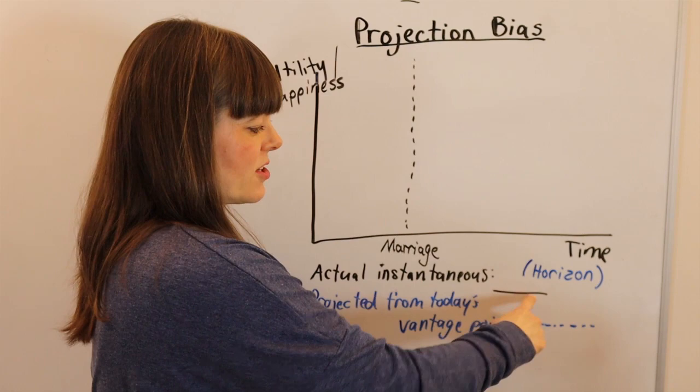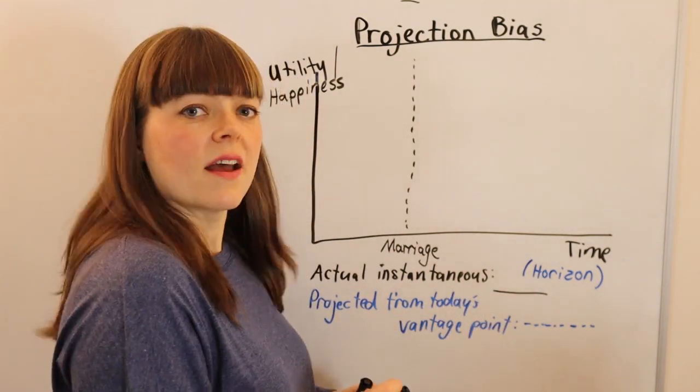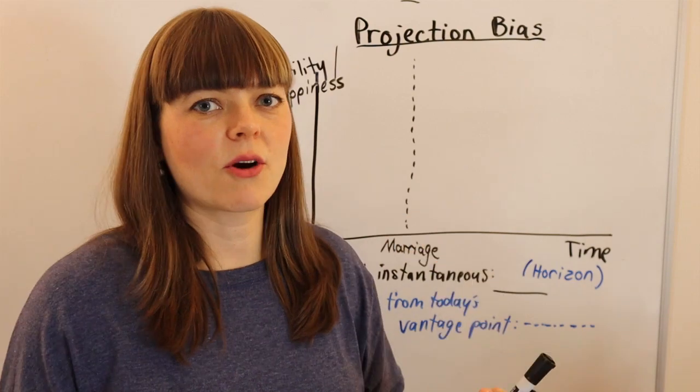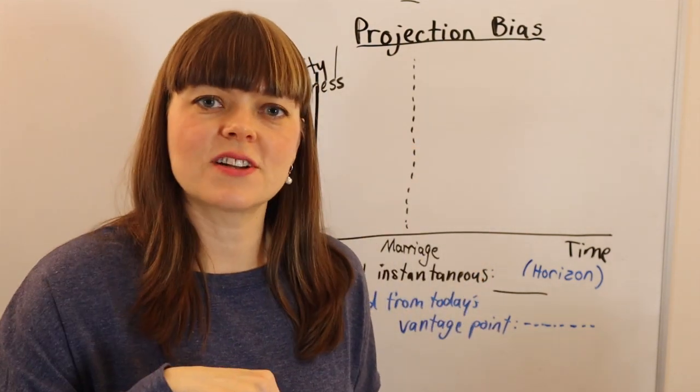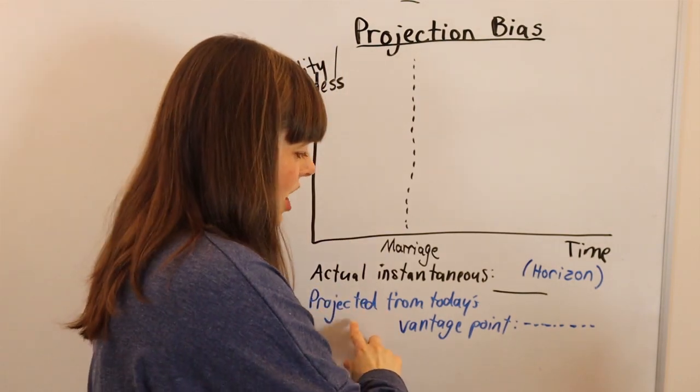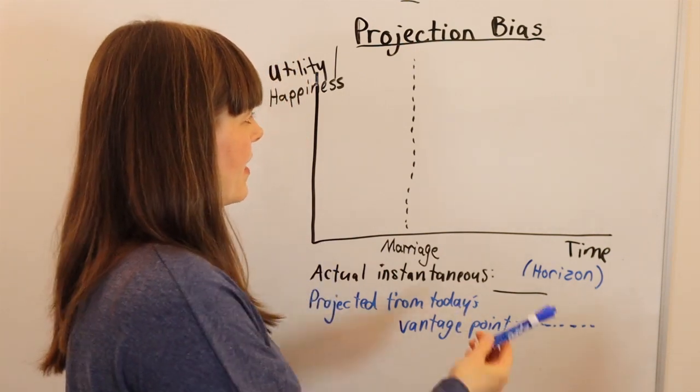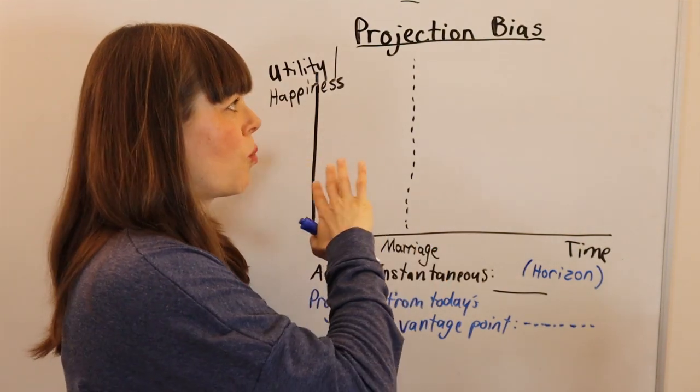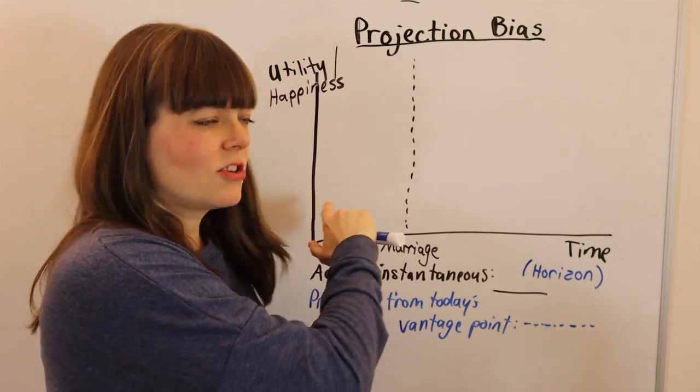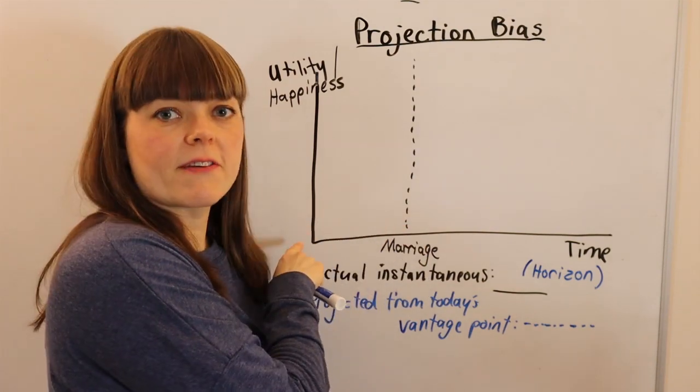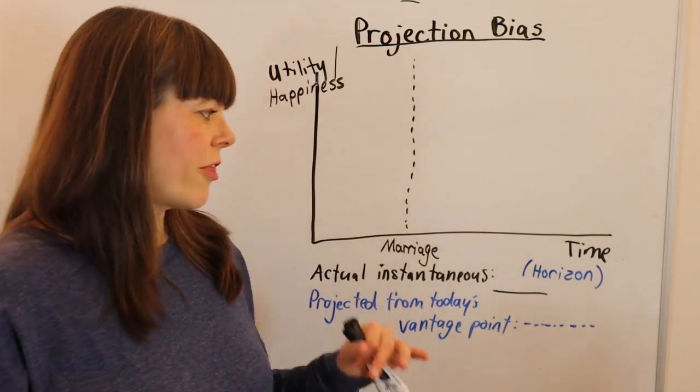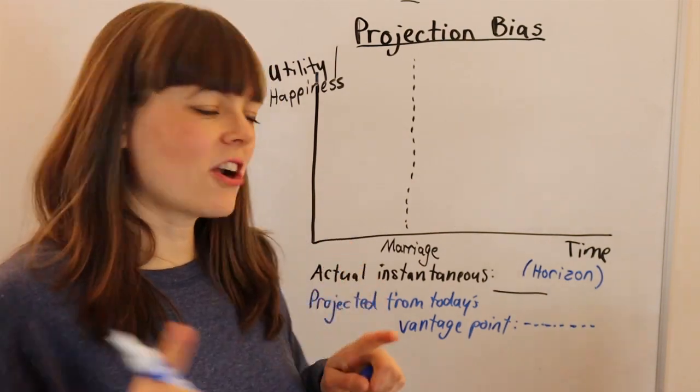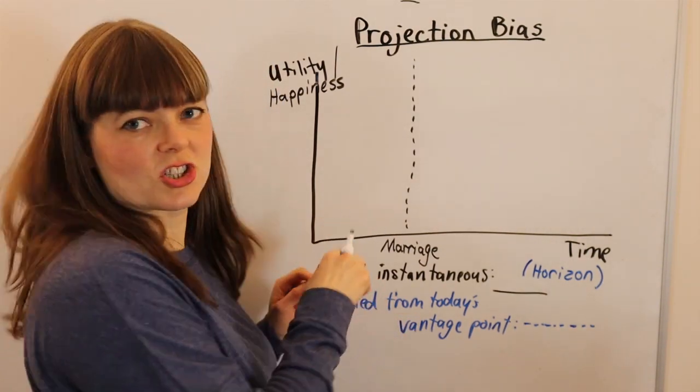Actual instantaneous utility, which I'll draw as a black solid line, is moment by moment. If you ask the person two years after marriage how happy they are today, you graph that - their utility in the moment. That's instantaneous utility. Projected utility, which I'll graph in blue as a dotted line, is you from today's vantage point thinking you'll get married in two years. What is your expected utility two years after marriage from today's perspective? Think about how these two might differ. You can start from zero as your baseline happiness.